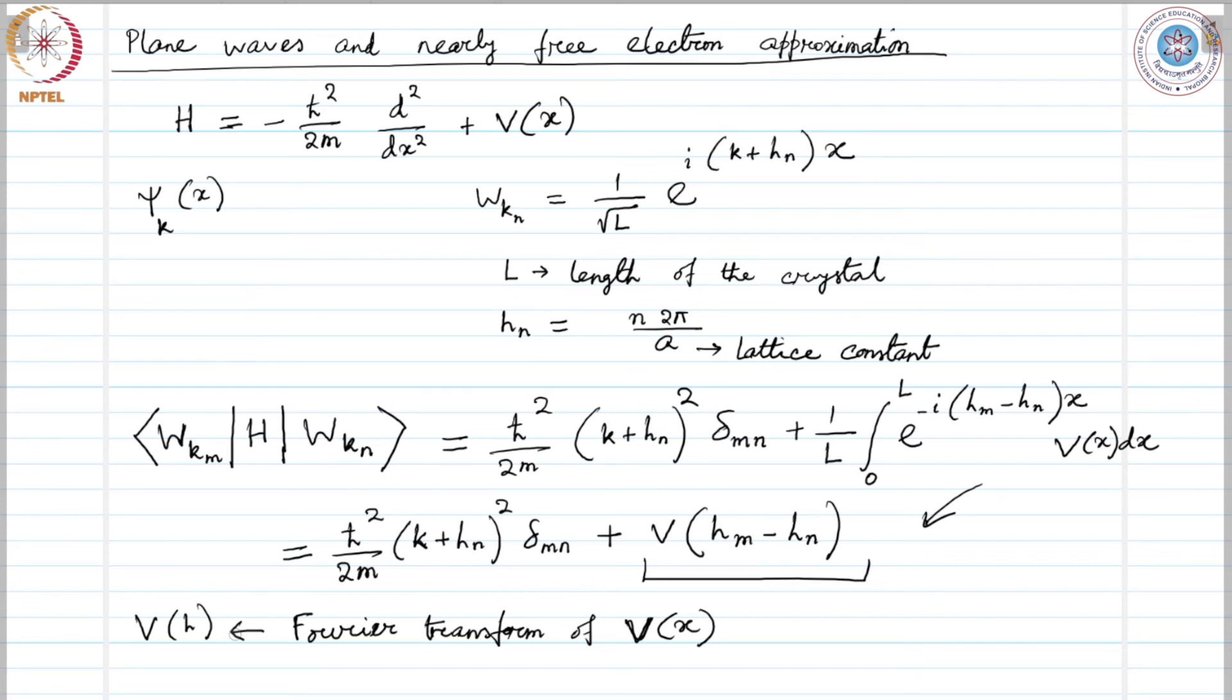So, if we now write a matrix of the Hamiltonian and if we try to diagonalize it on the basis set of plane waves, we will get a secular equation for the energy eigenvalues.